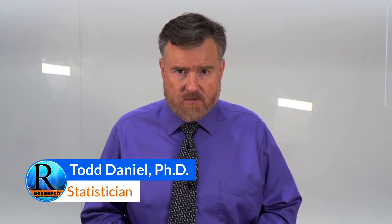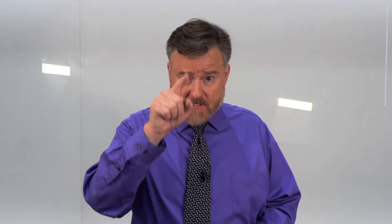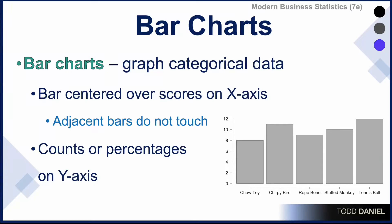When we learned about descriptive statistics for a single variable, we learned how to visualize those variables using bar charts. When we have a categorical variable, we can create a bar chart in which we put the categories on the x-axis and the counts or frequencies on the y-axis. Here we see five types of dog toys represented by the bars, and the heights of the bars tell us how many dogs were in each category. The bar is centered over the scores on the x-axis, and we know that it is a bar chart because the bars do not touch.